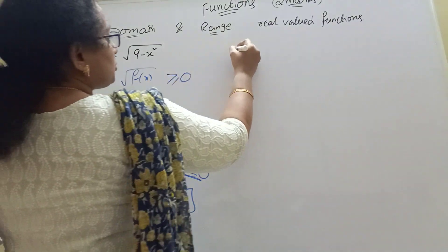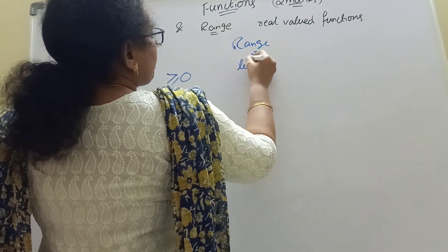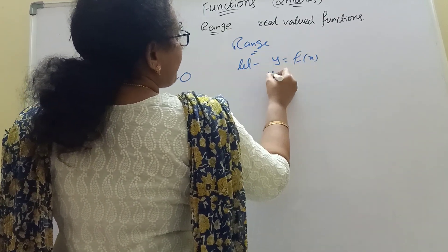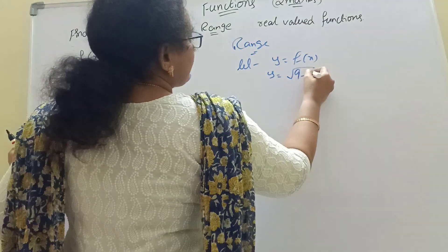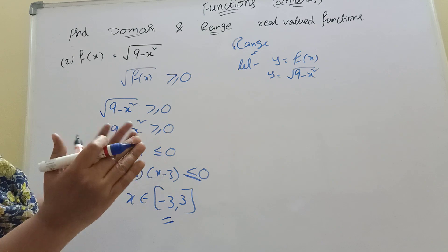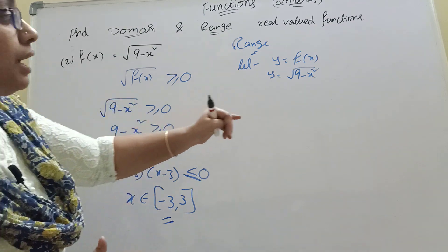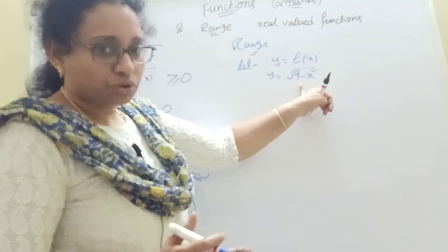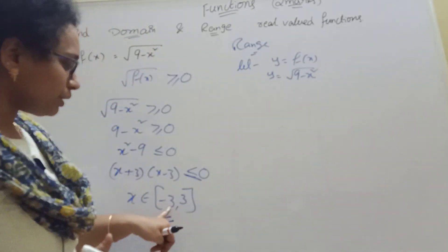Now range. Let y equal to f of x. What is y here? Root of 9 minus x square. These are the range values. Root gives positive values. x from domain.